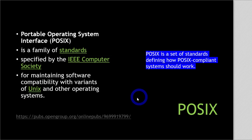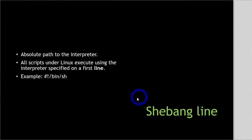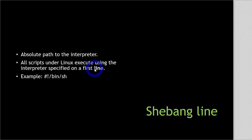The shebang line is the path to the interpreter, and we write it on the first line of the shell script. It tells the script which interpreter we want to use to run and interpret that script — which shell do we want to use. All scripts under Linux execute using the interpreter specified on the first line of the script. You write a hash, then an exclamation mark, then the path. If we are using born shell, we write /bin/sh.